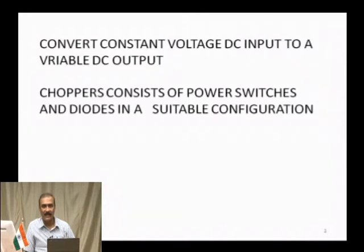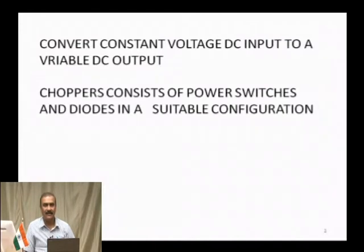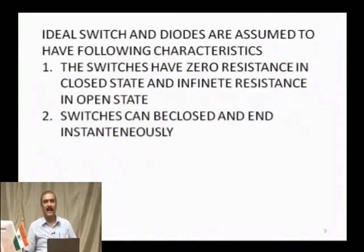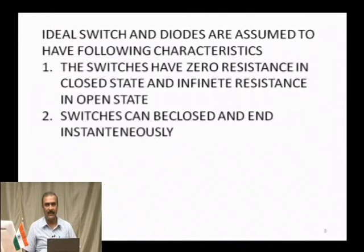These devices are ideal — as soon as you trigger the thyristor, it will switch on; as soon as you commutate, it will switch off. This is an ideal characteristic of a device. Chopper makes use of this concept of the switching device — we call it a power switch. The ideal switch and diodes form the chopper circuit, because a chopper consists of thyristors and diodes.